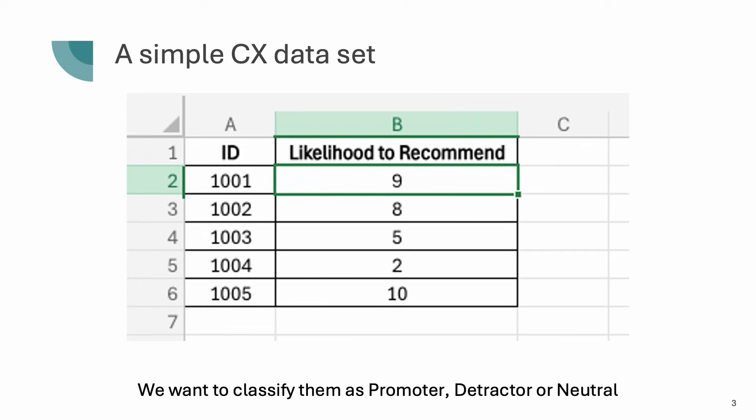So here's a simple set of customer satisfaction data. We've only got five interviews, to make life nice and simple. We've got likelihood to recommend and we want to add a column that will classify them as promoter, detractor, or neutral. You can already do that yourself in Excel, but we can make the process a little easier and maybe use a slightly different formula than the one you would have used.